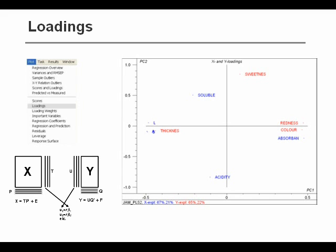We also see that thickness is oppositely correlated, because that is positioned to the left. So when the sensory attribute redness is high, then thickness tends to be low. We can also see how these Y variables correlate to our X data, our instrumental data. For example, that the LAB readings, the colors, are correlated to thickness and oppositely correlated to what is called color, which is really the raspberry color, the redness of the different jams.